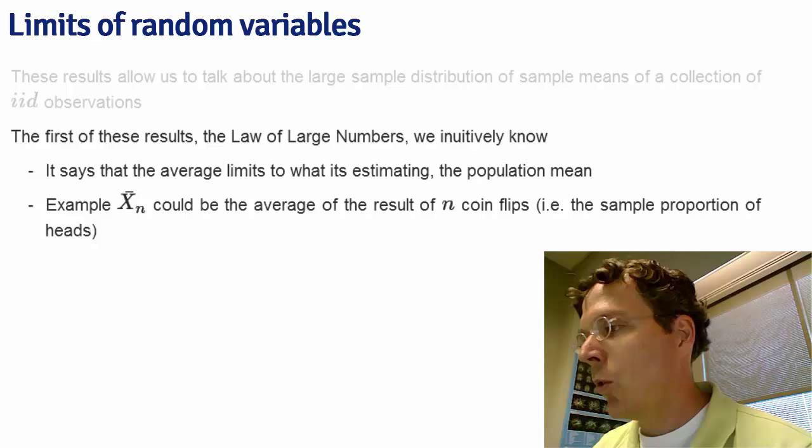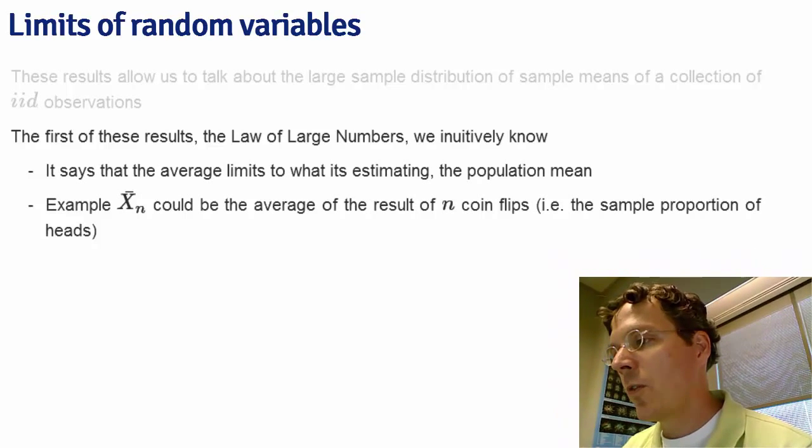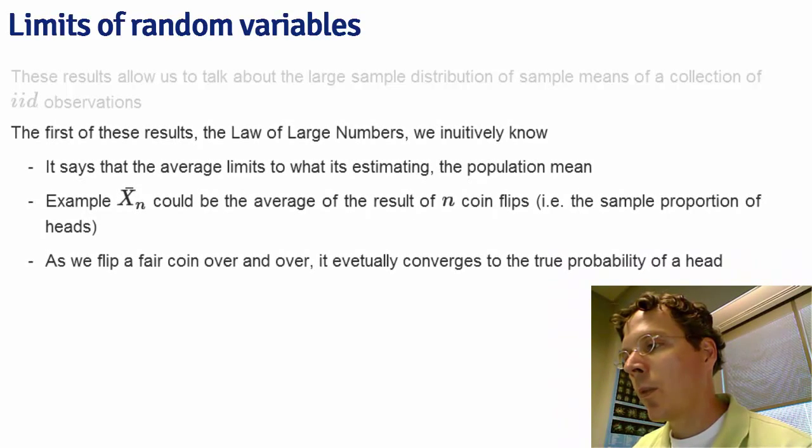As we flip a fair coin over and over, it eventually converges to the true probability of a head. Let's show the law of large numbers in action.